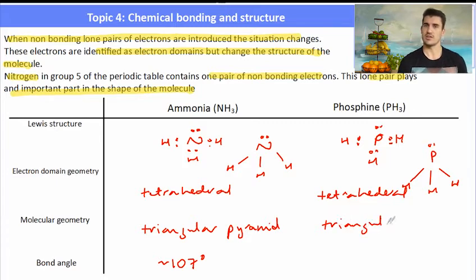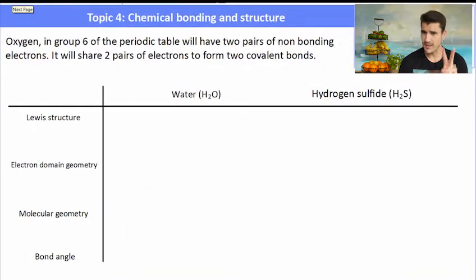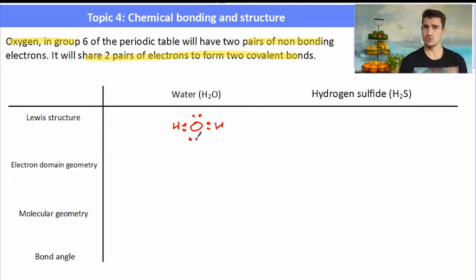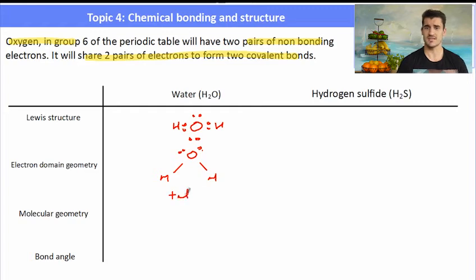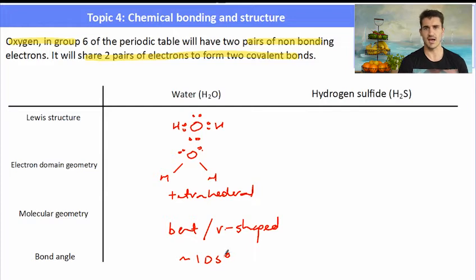For the electron domain geometry, you have to think about how many electron domains there are, and for the molecular geometry, you just look at where those atoms are in space. Oxygen has two pairs of non-bonding electrons, so water has a single covalent bond to one hydrogen and another single covalent bond to another hydrogen, leaving it with two pairs of non-bonding electrons. Its electron domain geometry has four electron domains — two bonding, two non-bonding — so it takes up a tetrahedral electron domain geometry. But its molecular geometry, considering just the oxygen and the hydrogens, is described as bent or V-shaped, with a bond angle of approximately 105 degrees.